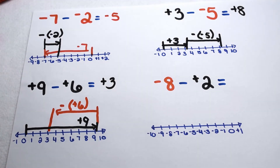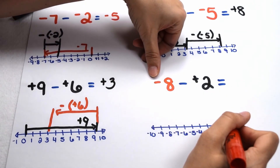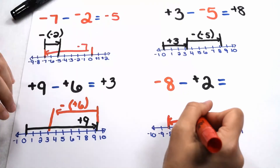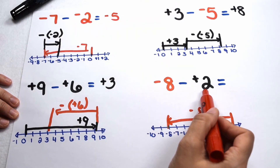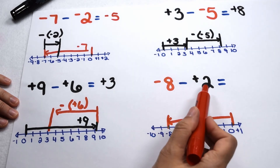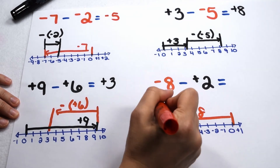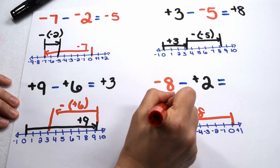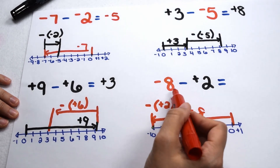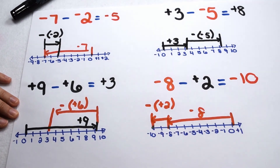In our last example, I'm going to start at 0. Negative 8 tells me that I'm going to go eight places to the left. I need to take away positive 2. Positive 2 would normally tell me that I need to go back to the right, but I want to do the opposite of positive 2, which means I'm going to continue on two places to the left. When I go two more places to the left, that lands me at negative 10. So negative 8 minus positive 2 lands me at negative 10.